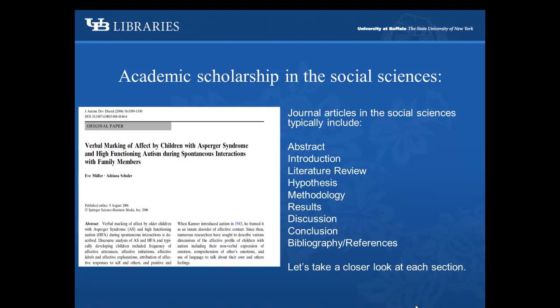Because of their conciseness, journal articles tend to follow a standard format. Journal articles in the social sciences typically include an abstract, introduction, literature review, hypothesis, methodology, results, discussion, conclusion, and bibliography or list of references.